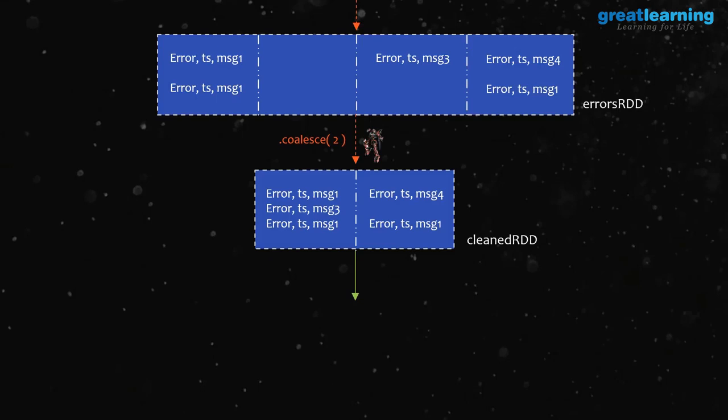Repartition can also be used to decrease partition count, but coalesce is more intelligent for decreasing. With coalesce, data just moves locally — some messages shift to neighboring partitions and the empty ones are deleted, so there is minimal data movement. With repartition, it reads all data into RAM and does a full shuffle before redistributing — maximum data movement. So: to decrease partitions, prefer coalesce; to increase, use repartition — there's no other way.